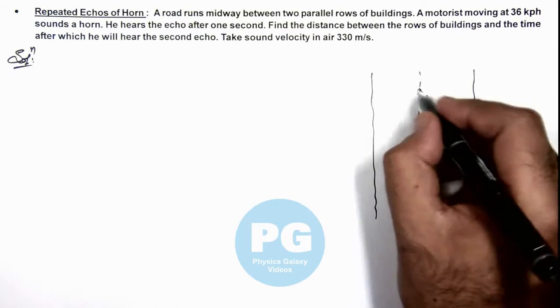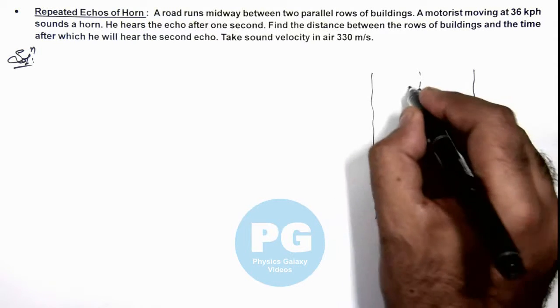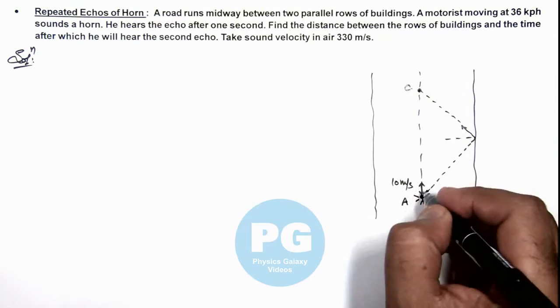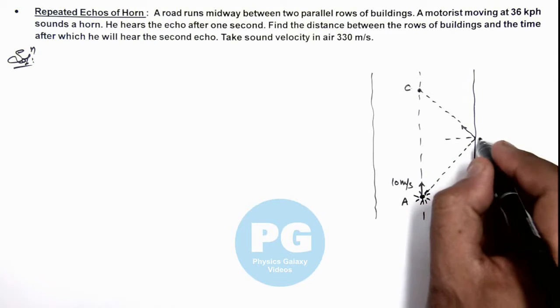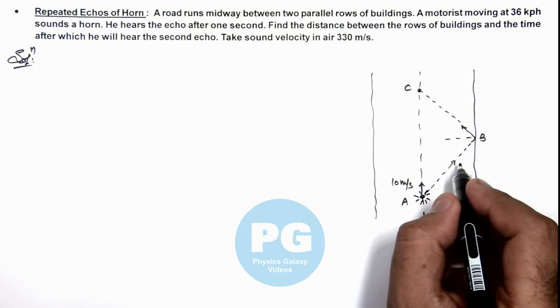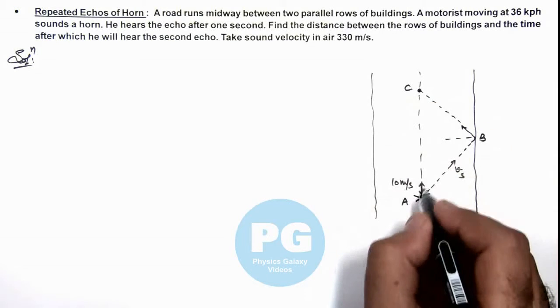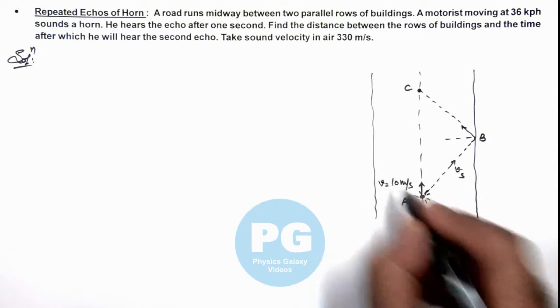So when the motorist will reach this position from, say A to C, sound will travel in the same time in distance from A to B and then B to C. Here sound is traveling with the velocity Vs and this is the line along which motorist is traveling with the velocity V.